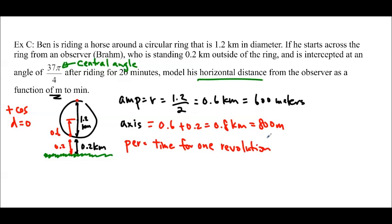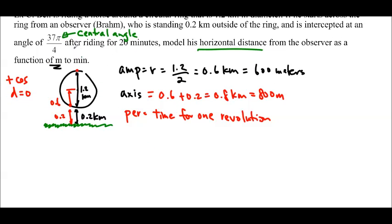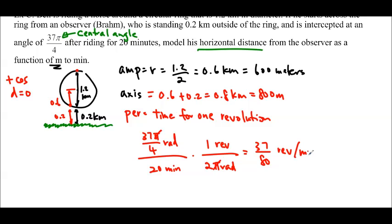So we could find the speed and then do it that way. But I think the quicker way is to just say, well, I have 37π over 4 radians for 20 minutes. And I know that I have one revolution every 2π radians. So I'll use that conversion, right? So we'll cancel these π's and 37 over 4 times 20 times 2 should give us 37 over 80 minutes, revolutions per minute. So we want to know minutes per revolution. So it's going to be 80 over 37 minutes per revolution. Like that. We just flip it upside down. So that gives us our period.